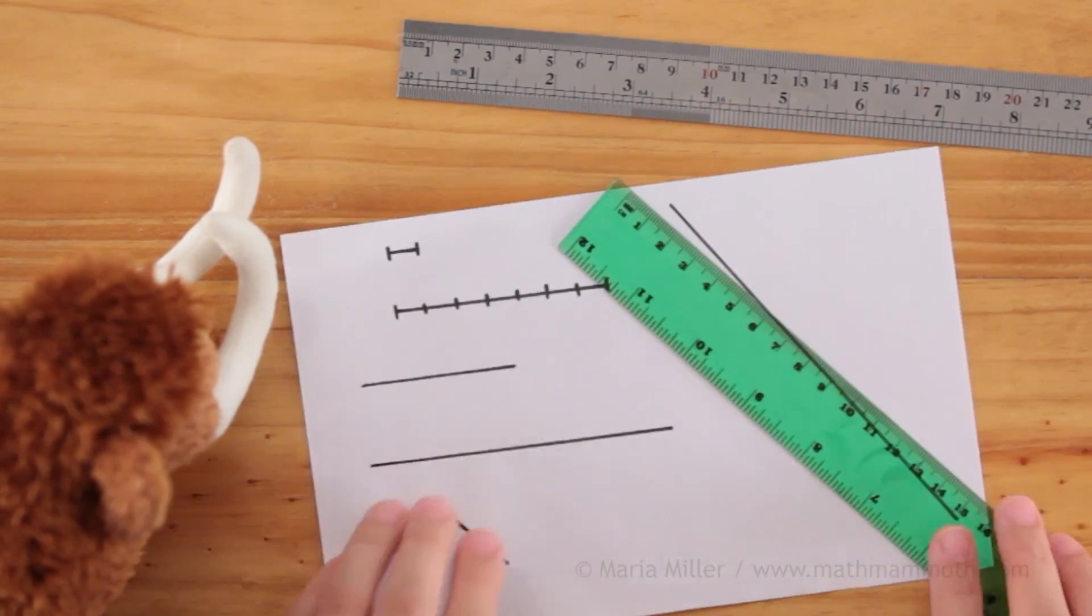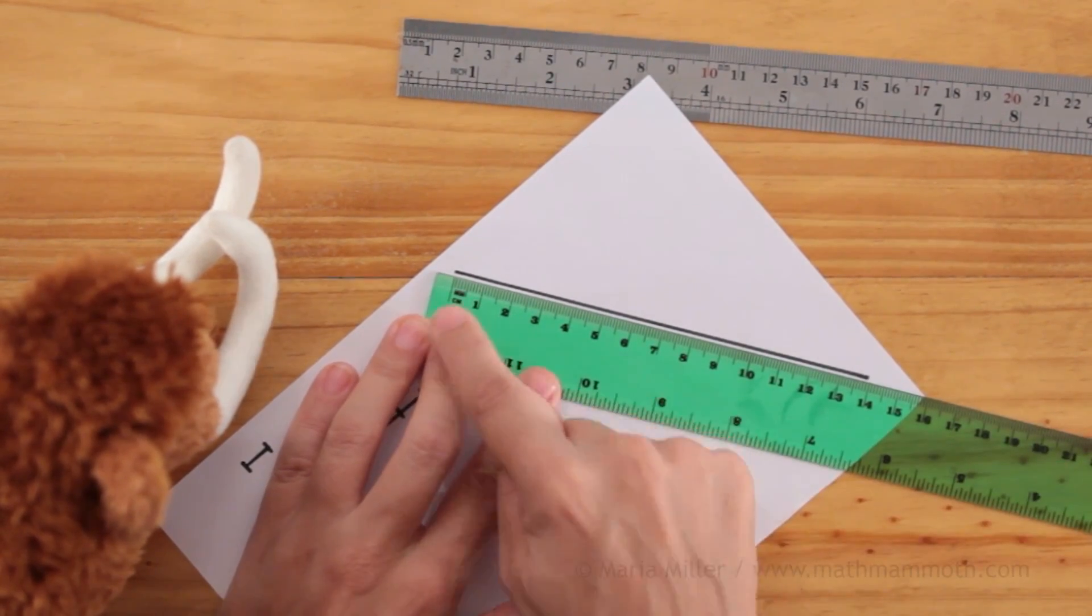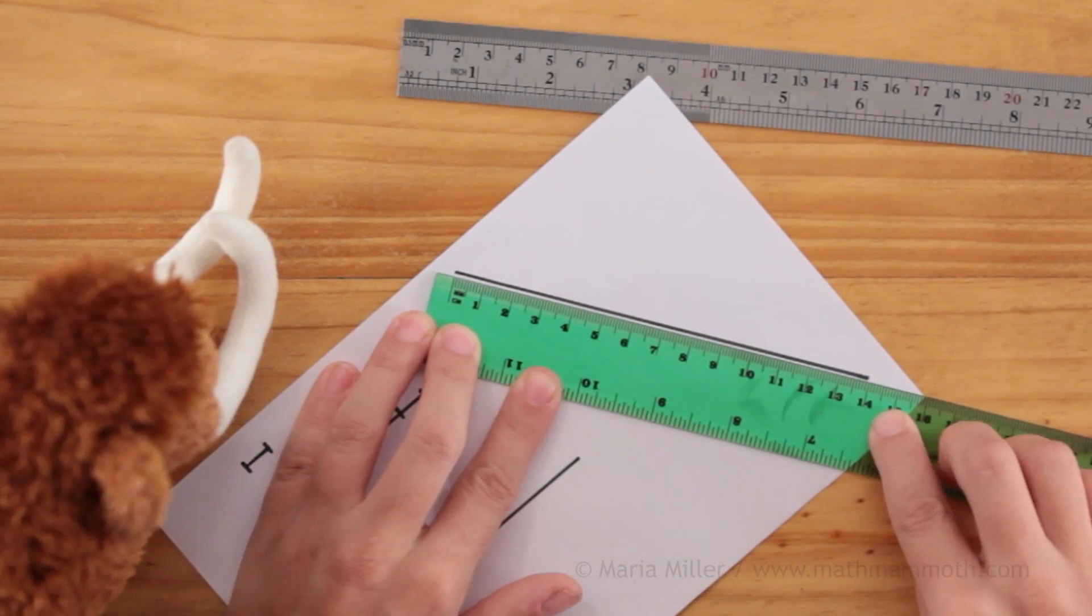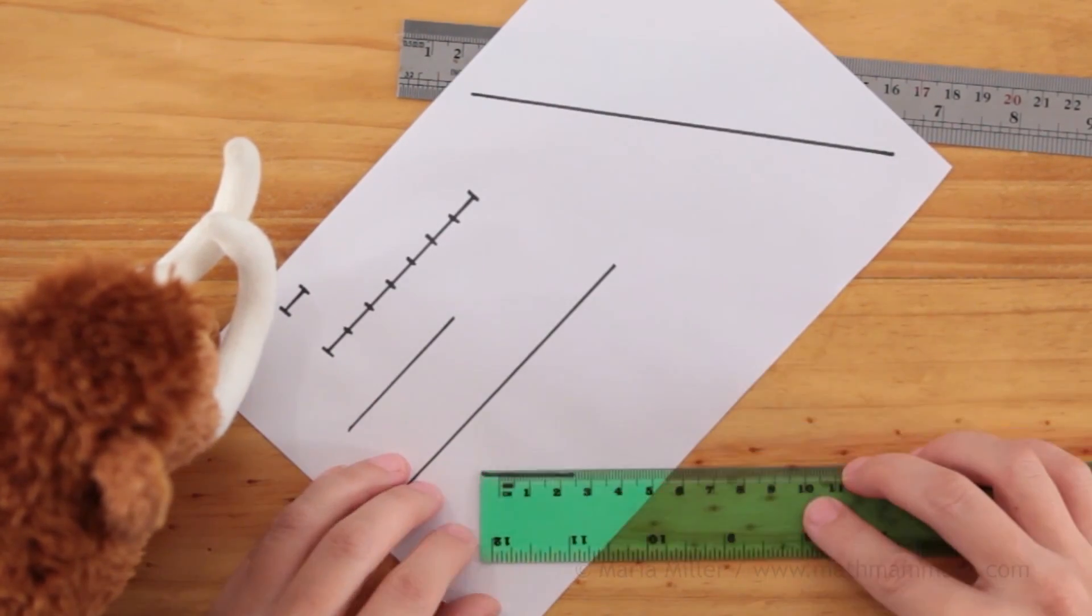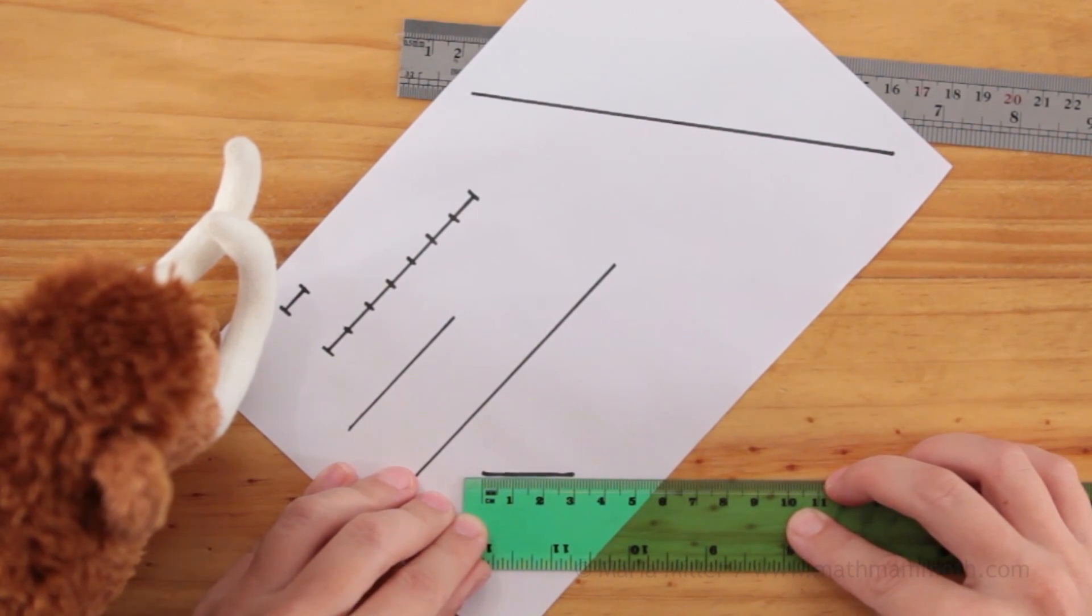Let's measure this line too over here. I have to line it up over here like that. Then we go all the way here and we can see it is 14 centimeters long. Or this little one here. Can you tell? It is exactly three centimeters long.